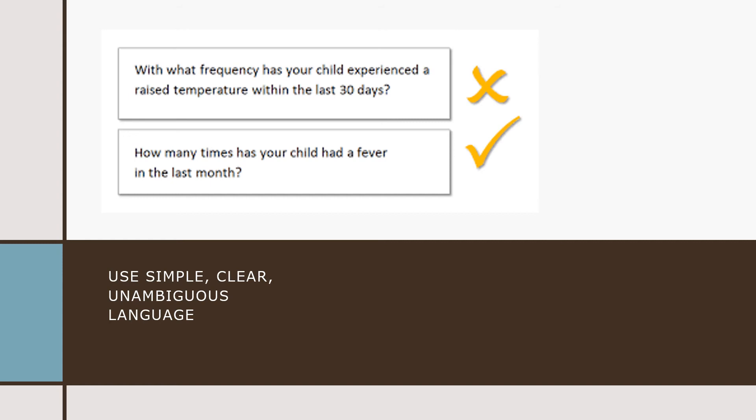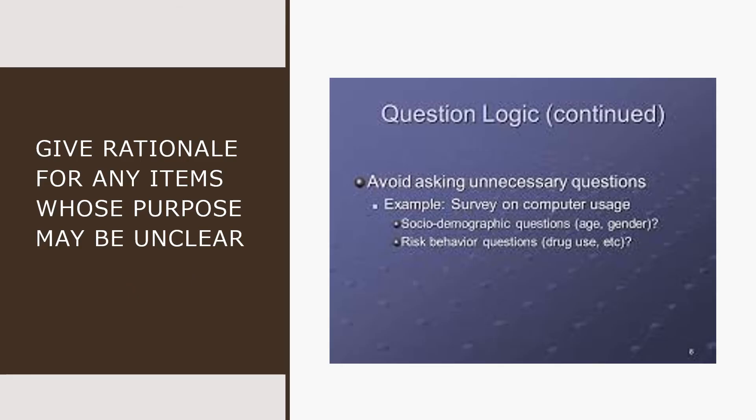Tip number four: use simple, clear, and unambiguous language. Write questions that communicate exactly what you want to know. Avoid terms that your respondents may not understand, such as obscure words, technical jargon, acronyms, or abbreviations that you may think people are familiar with but they are not. Also avoid words that may have imprecise meanings — for example, words like 'several' or 'usually' can create doubt in the minds of respondents.